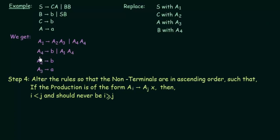Now let's check the second production. A4 gives b is already in Greibach Normal Form since a non-terminal directly gives a terminal. However, A4 gives A1 A4: here i is 4 and j is 1, so i is greater than j. This violates the rule of step number four, so we need to resolve this portion.